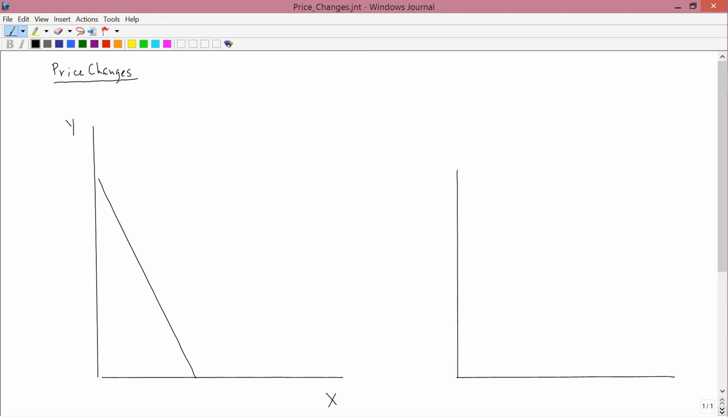Suppose one has an initial budget constraint, as I've drawn here, let's call it BC0, and I want to consider the case of the price of X falling.